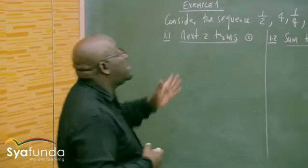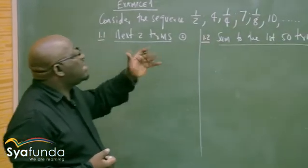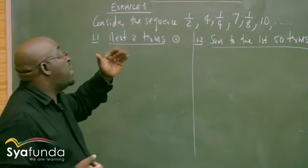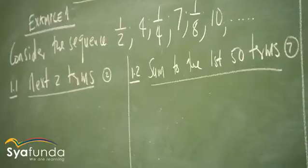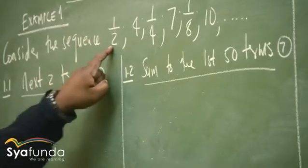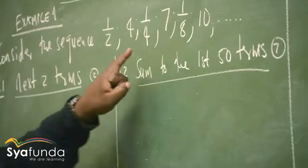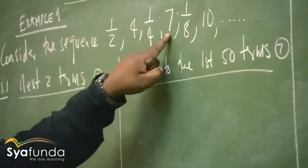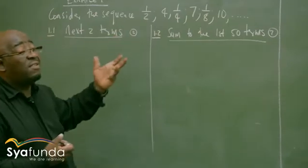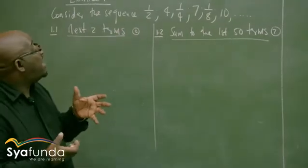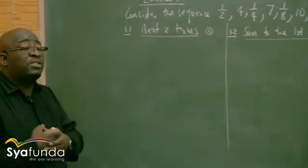When I look at this sequence, you can see that it is a combination of both the arithmetic and the geometric sequence. Because I see a fraction, another fraction, and another fraction, but I also see numbers 4, 7, and 10. It is possible that in your exam we can find patterns mixed — both the arithmetic and the geometric sequence.